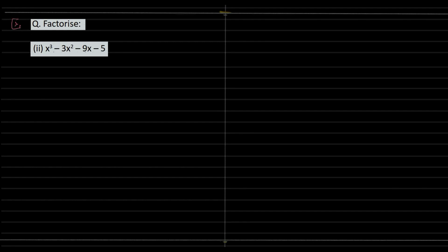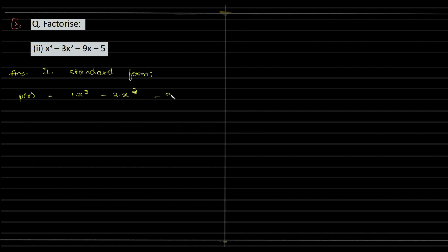To factorize this particular cubic expression, the very first thing we have to start off with is writing things in standard form. So we have p(x) equal to x cubed minus 3x squared minus 9x minus 5.